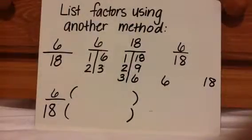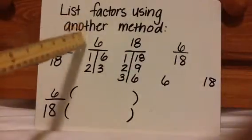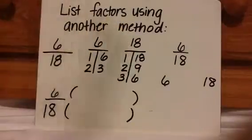Now let's list factors using another method. On the top left, 6/18ths, this is the method I showed when I first introduced finding greatest common factor.